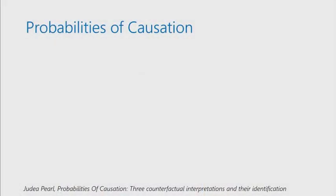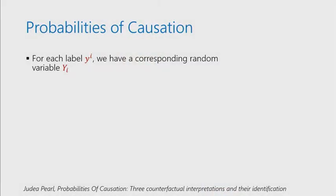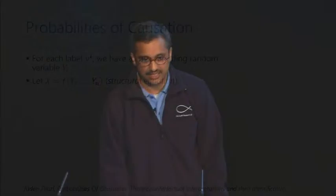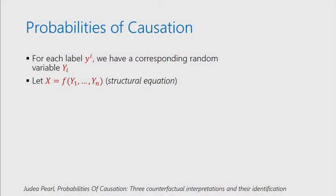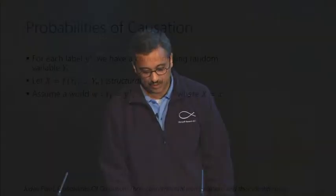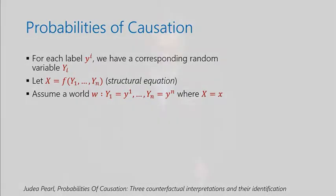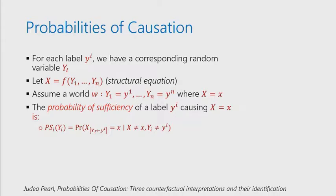The question is, what is this measure of the root cause? For this, we borrow this probability of causation introduced or formulated by Judea Pearl. Let me briefly describe what this is. For each training label y_i, we have a corresponding random variable capital Y_i. The output variable x is some function of these random variables Y_1 through Y_n, and this is the structural equation. Let's assume a world or situation where capital Y is given values equal to small y_i's, where the output is capital X equals small x.